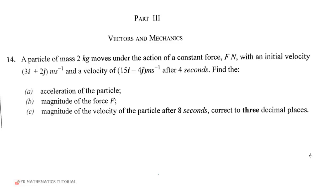Let's look at Question 14. A particle of mass 2 kg moves under the action of a constant force F newtons, with an initial velocity (3i + 2j) meters per second and a velocity of (15i - 4j) meters per second after 4 seconds.